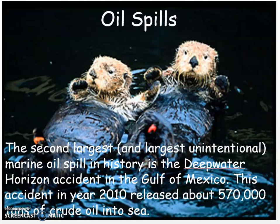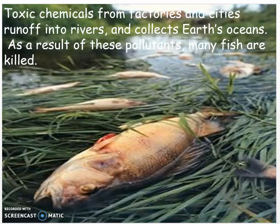There is a movie that has been made about this incident called Deepwater Horizon. When you get a chance, look it up on Netflix and watch it — it's a great depiction of what happened. Another way we impact ocean ecosystems is toxic chemicals from factories and cities that run off into rivers and collect in the Earth's oceans. As a result of these pollutants, many fish are killed.